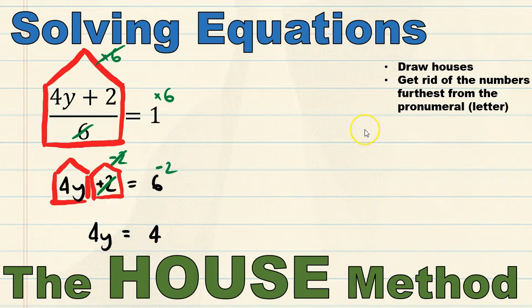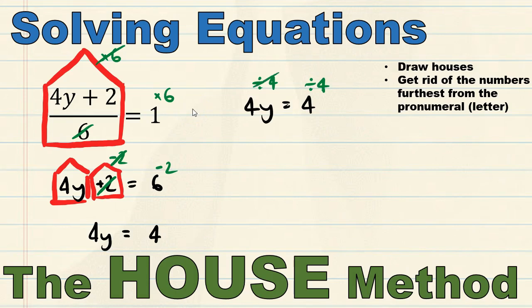I've run out of room so I need to rewrite this up on the top right. I don't need to draw houses anymore because there's only one operation left — my one operation is to times by 4. The opposite of timesing by 4 is dividing by 4, so I write divide 4 on both sides of the equal sign. This cancels out the 4, leaving me with just y. And 4 divided by 4 is 1, so y equals 1.